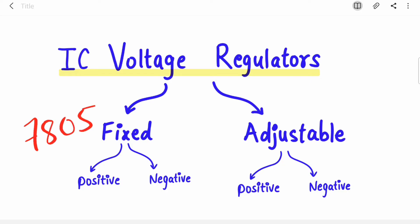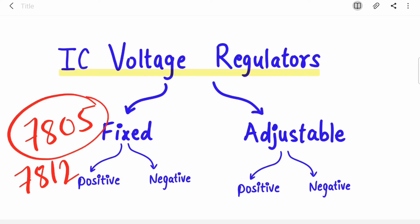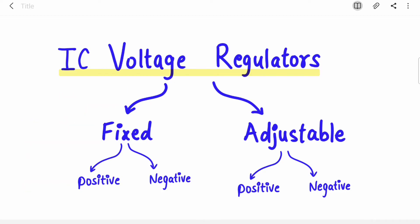They may ask about any other voltage regulator like 7812 or 7815. The 7805 is the favorite IC of examiners and it is widely used in projects also, so many of you must be already using it in your projects or mini projects, or you will be using it in the future. There are two types of voltage regulators: fixed and adjustable. In this video we are going to discuss fixed.